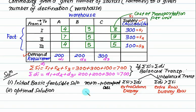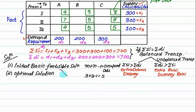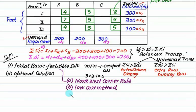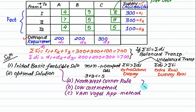For the present case, how many rows? 3. How many columns? 3. So m plus n minus 1 equals 5. That means a minimum of 5 cells must be allocated. The initial basic feasible solution can be obtained by three methods: the first is the simplest, called the North-West Corner method; the second is the Least Cost method; and the third is the Vogel Approximation Method (VAM). These three methods check whether the condition m plus n minus 1 equals occupied cells is satisfied.